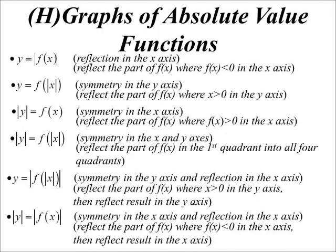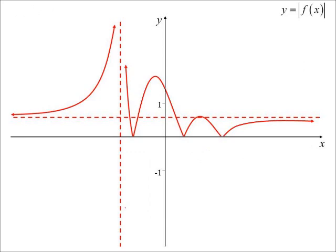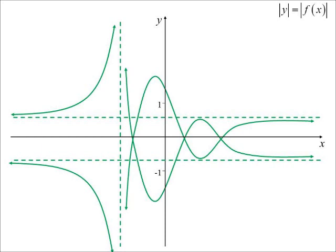Let's try |y| = |f(x)|. We're going to have symmetry in the x-axis and reflection in the x-axis. The part of the original function where it was negative gets reflected in the x-axis — that gives us y = |f(x)|. Then applying |y| = some function reflects the result above and below. Starting from the original graph and applying both absolute values, we get a reflection above and below. What a beautiful graph!